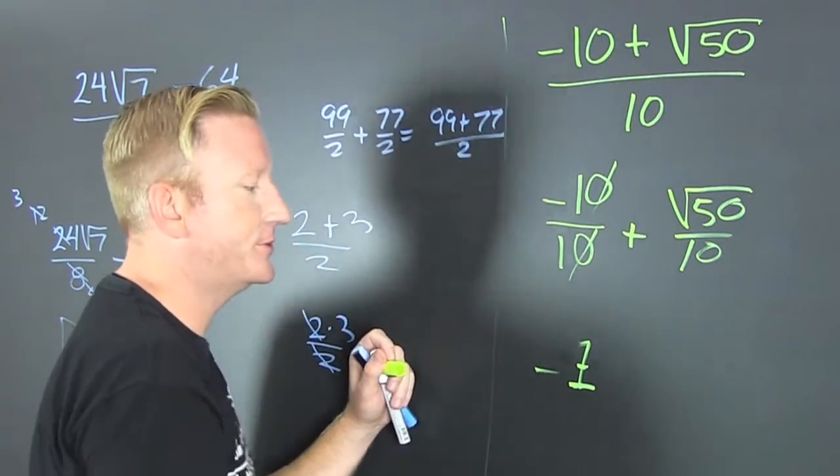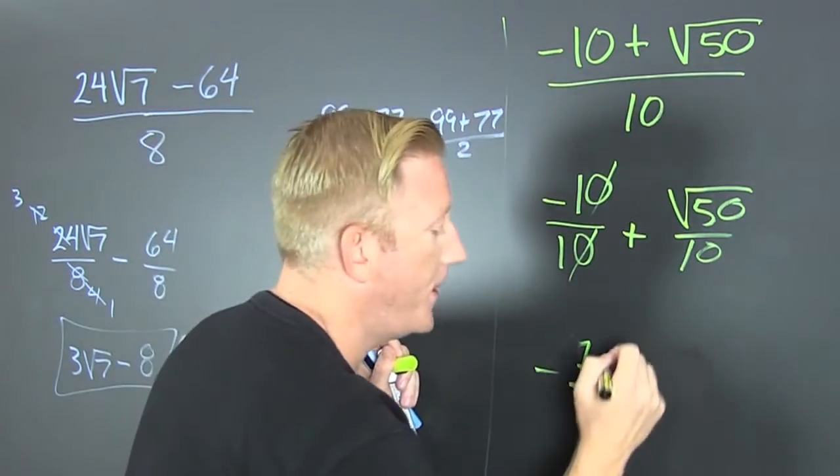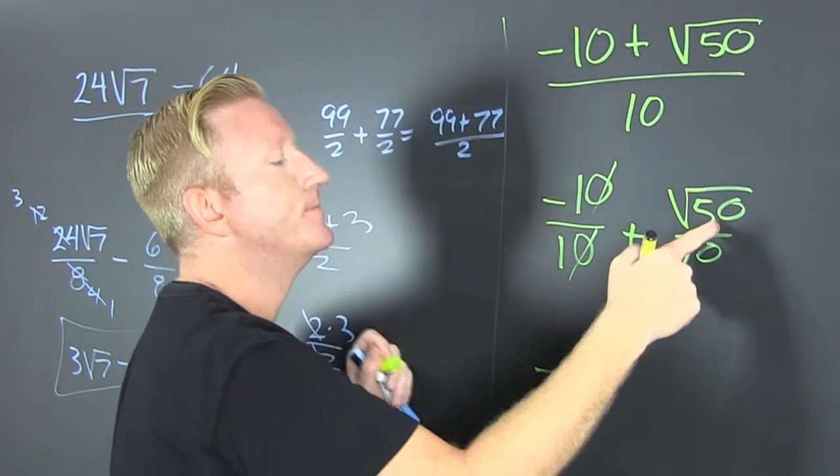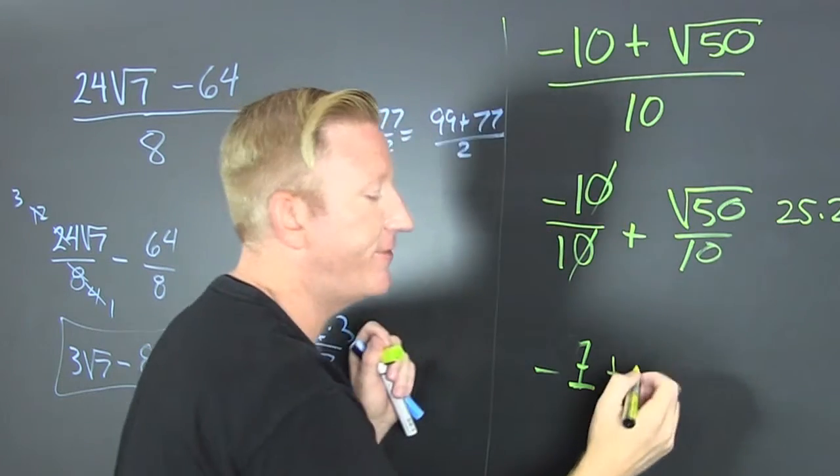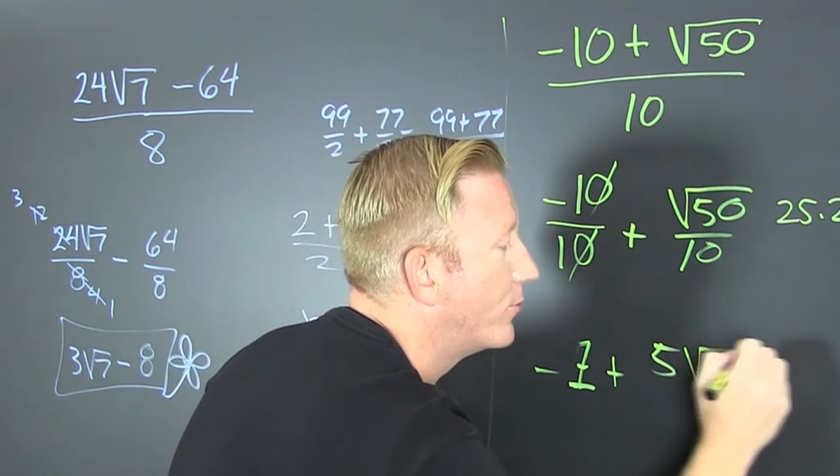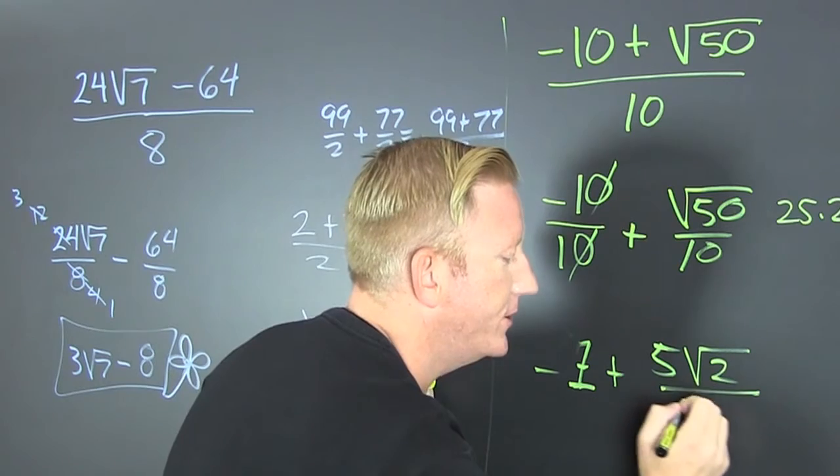Oh, yeah. Dress it up. Hat and boots. So that's a minus 1 plus... Whoa, whoa there. That's 25 times 2. And 25 is a square so a 5 can come out. So that's 5 root 2 over 10.